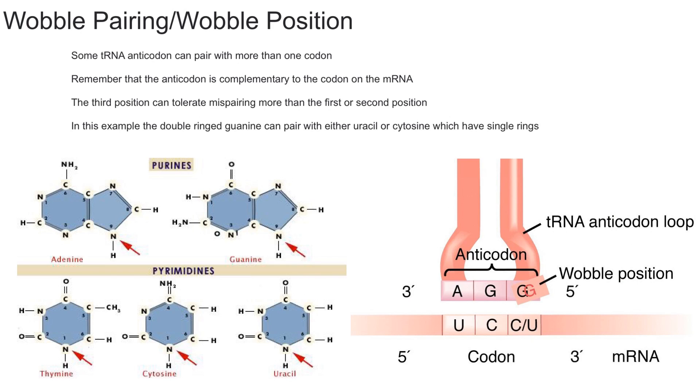It's referring to the third position and it states that the third base in an mRNA codon can undergo non-Watson-Crick base pairing with the first base of a tRNA anticodon. So these two right here.